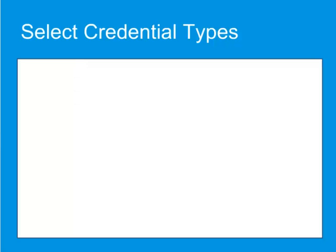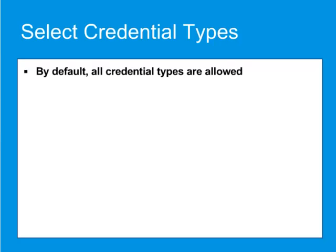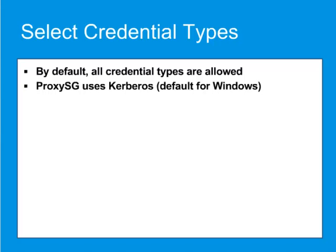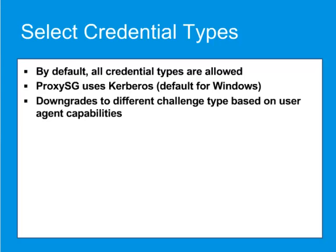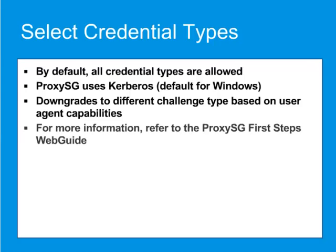Now you need to specify the type of credentials to accept from the user agent. By default, all credential types are allowed. The ProxySG will try to use Kerberos, which is the default authentication type for Windows clients, but will automatically downgrade to a different challenge type depending on the user agent's capabilities. For more information on credential types, refer to the ProxySG First Steps web guide.